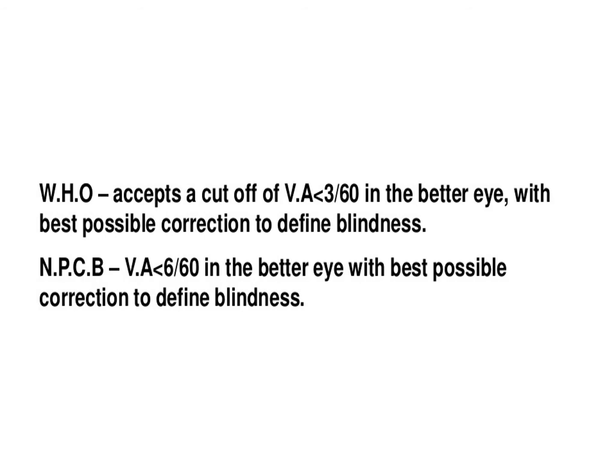The WHO accepts a cut-off of visual acuity less than 3/60 in the better eye with best possible correction to define blindness. The NPCB, i.e. National Programme for Control of Blindness, uses visual acuity less than 6/60 in the better eye with best possible correction to define blindness.